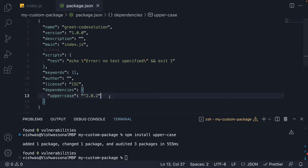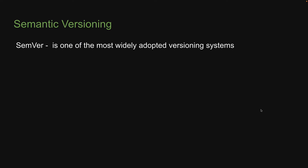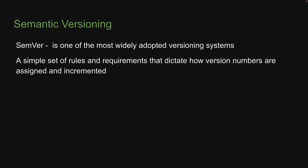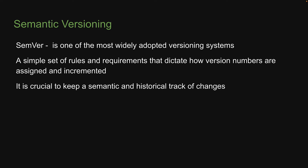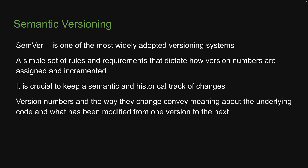That is because npm adopts what is known as semantic versioning. Semantic versioning, also known as SemVer, is one of the most widely adopted versioning systems. It is a simple set of rules and requirements that dictate how version numbers are assigned and incremented. In today's world of web development, new packages are being created every single day, and they all undergo changes — it is crucial to keep a semantic and historical track of those changes. Version numbers and the way they change convey meaning about the underlying code and what has been modified from one version to the next.